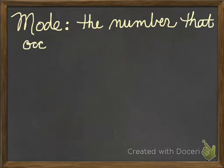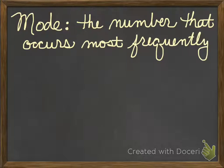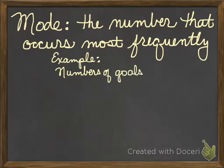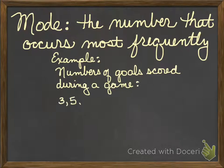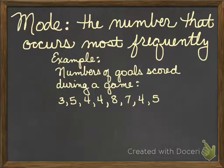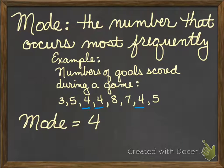Let's go ahead and look at the mode. The mode is the number that occurs most frequently in a set, so we're just looking for the one that's there the most often. Looking at our number of goals again, we're going to look for which one occurs the most. I can tell that I have three fours, so my mode is the number four — that's the number that occurs the most in the set.